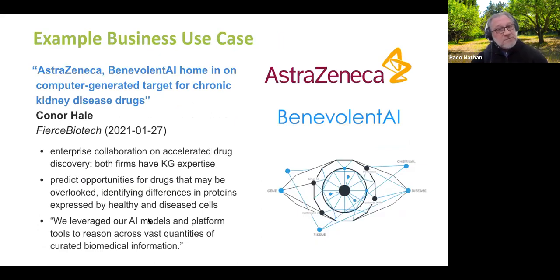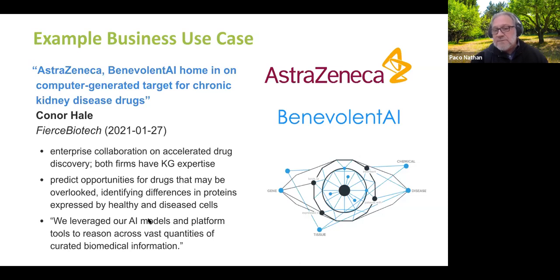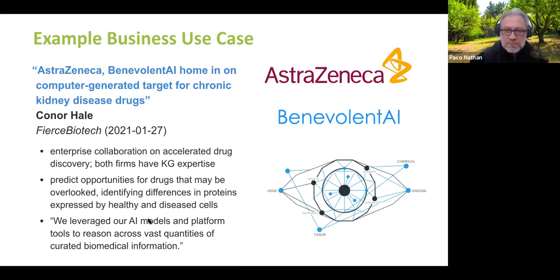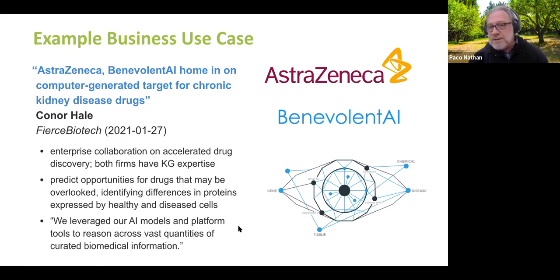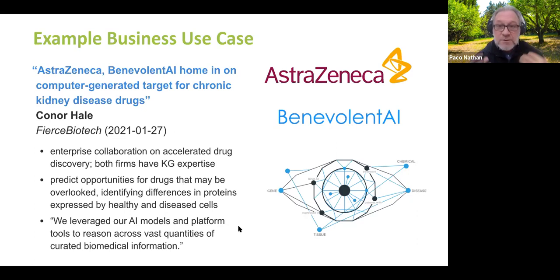As far as some business use cases — there are some well-known ones. I mentioned Google, but there are some having a lot of impact right now. Certainly AstraZeneca and Benevolent AI — both firms have been doing graph-based work for a while. They have a joint collaboration for accelerating drug discovery and trying to find opportunities for drugs that may have been overlooked because of high-dimensional problems where researchers just couldn't connect the dots in the research. This is a very interesting area of AI applications — being able to find those links in the biochemistry where it's really just too much of a high-dimensional problem for humans to grapple with.